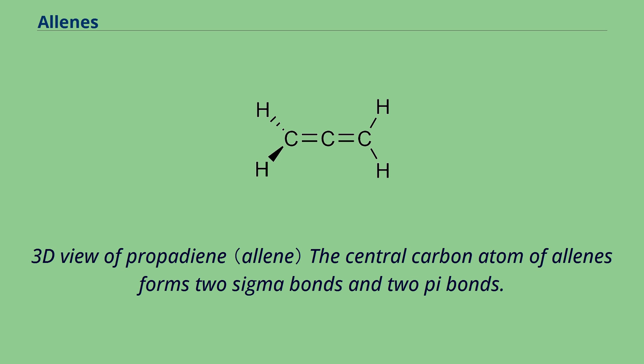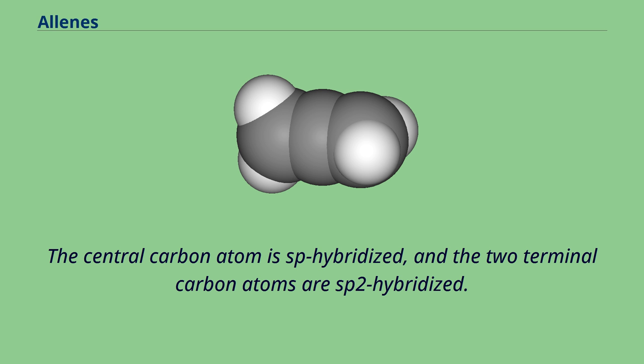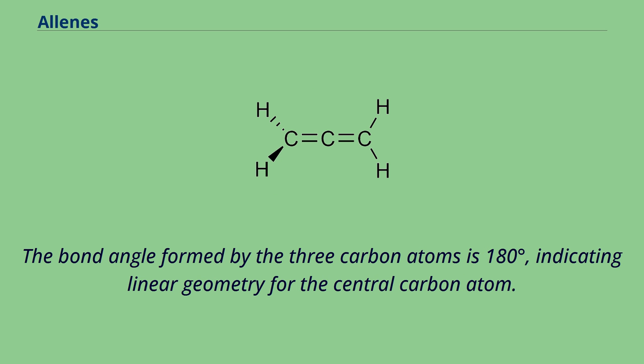3D view of propadiene: the central carbon atom of allenes forms two sigma bonds and two pi bonds. The central carbon atom is sp-hybridized, and the two terminal carbon atoms are sp2-hybridized. The bond angle formed by the three carbon atoms is 180 degrees, indicating linear geometry for the central carbon atom.